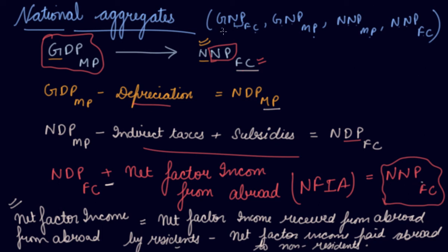Simply, from GDP at MP you can go to GNP at FC. G and G are the same, so no reduction of depreciation. MP and FC are different, so from MP to FC you subtract indirect taxes and add subsidies to get NP at FC. For national product, you add net factor income from abroad to the domestic product to get your national product. In this way you can find out GNP at FC.